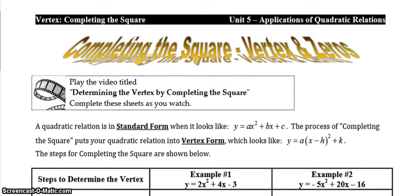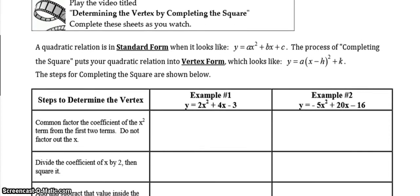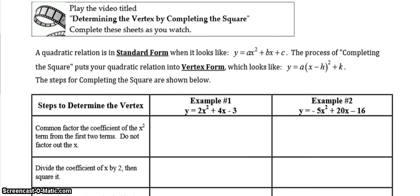Today you're going to learn how to rearrange an equation from standard form to vertex form. Standard form is the form where the quadratic, the linear, and the constant term are all on one side of the equation, with either 0 or y on the other side. We're going to rearrange it into vertex form, where you're able to pick out the h and the k to get the vertex. The h is the x-coordinate and it's the opposite sign to what it looks like, and the k is the y-coordinate of the vertex.